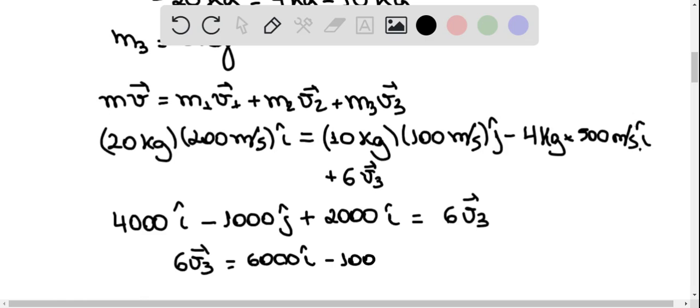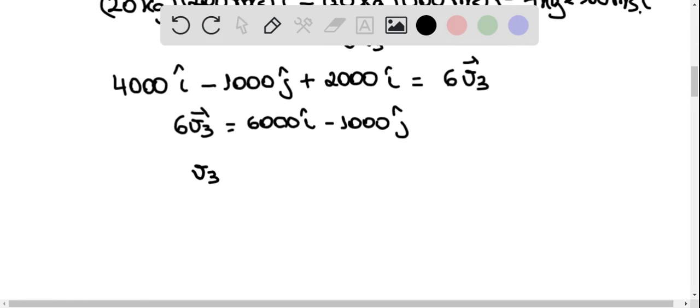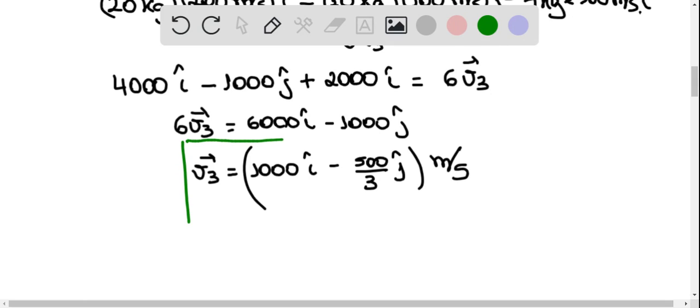Is equal to 6 v3. So 6 v3 is equal to 6,000 i minus 1000 j, meaning that v3 is 1000 i minus 1000 divided by 6. I'm going to simplify it as 500 divided by 3 j, this is in meters per second. So this is our velocity.